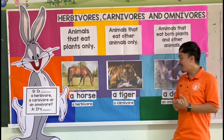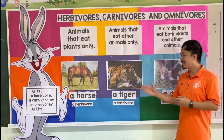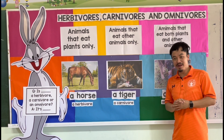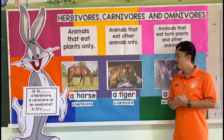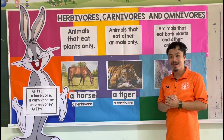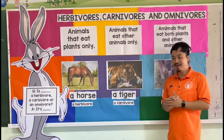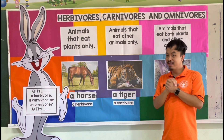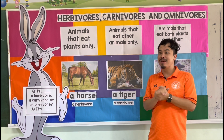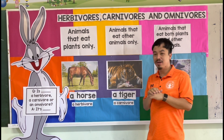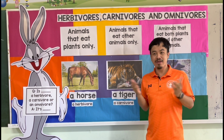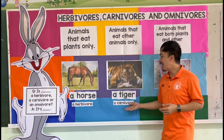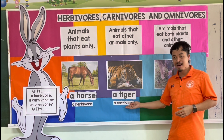The second example is a tiger. What does a tiger eat? A tiger eats other animals — tigers eat zebras, giraffes, and other animals. Therefore, a tiger is a carnivore.